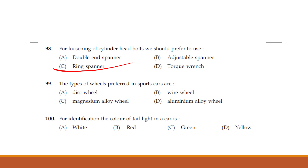Magnesium alloy wheels are a type of wheel. Last question: for identification, the color of the tail light in a car is — option B — red.